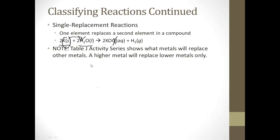If you take a look at your reference table, Table J, the activity series, it shows what metals will replace other metals. On that activity series, you have a list of metals. Whatever's higher on the list will kick out or replace whatever is lower on the list.